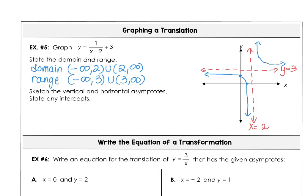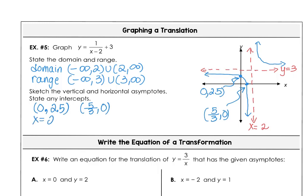We've sketched the vertical and horizontal asymptotes. If we substitute 0 into our formula, then we have 3 minus one half, so 2 and one half is our y-intercept. If we set the equation equal to 0 and subtract the 3 and solve for x, we find that 5 thirds is our x-intercept. So the x-intercept is at (5/3, 0), and the y-intercept is at (0, 2 and one half). The vertical asymptote is x equals 2 and the horizontal asymptote is y equals 3.